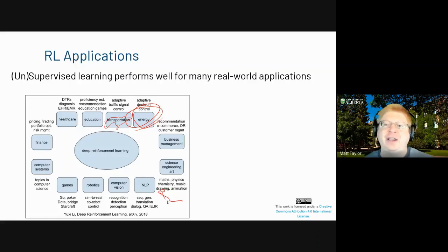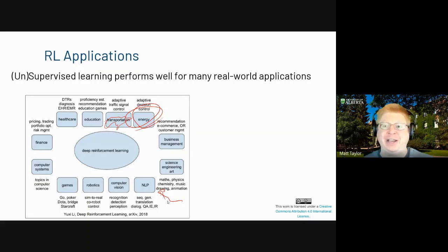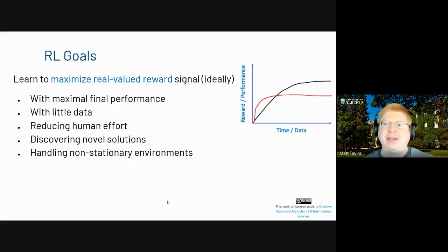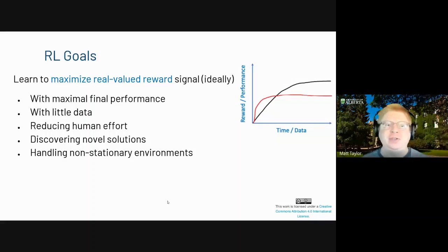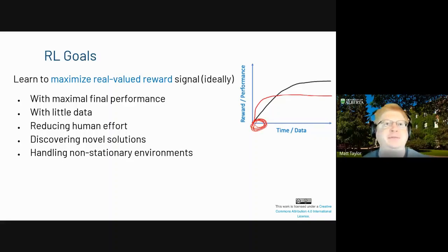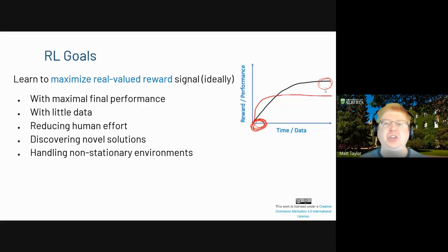Games are a great domain to test reinforcement learning because everything is controlled. But as we go into the real world, things get a lot more complex — stationarity and noise will absolutely play a role. Along the x-axis is the amount of time or data used, and along the y-axis is performance or reward. We want to accumulate more reward over time. The black line achieves higher final performance, but if data collection is expensive, you might prefer the red line — performing well as fast as possible.